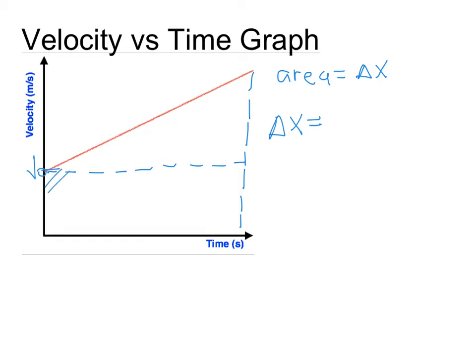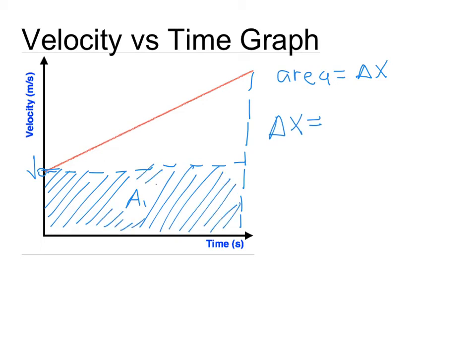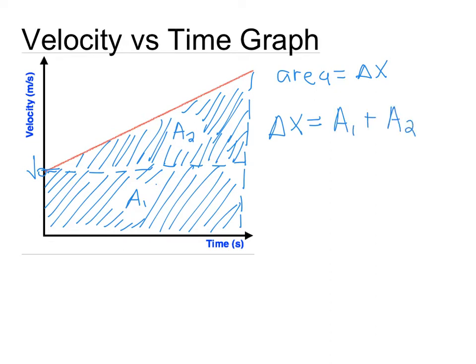So here what we want to do is talk about the area of the rectangle first. And then we've got the area of the triangle, we'll call that A₂. So we've got the displacement is given to us by area one plus area two. Area one is easy enough to get because we've got the whole base here is just time, and the height is V initial. So we've got V initial times time. And that takes care of area one.